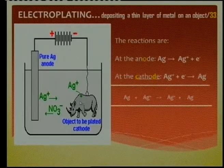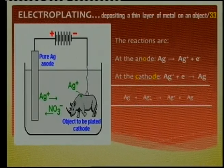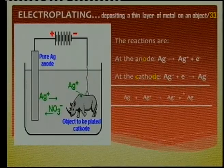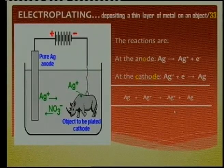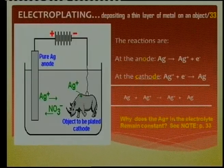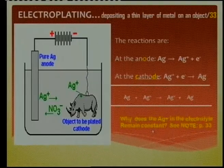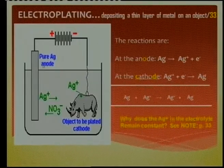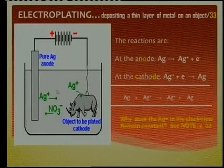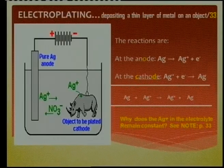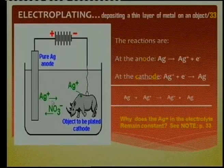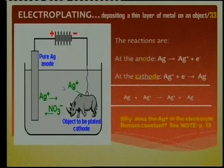Two questions: Can you write the overall reaction? And why does the silver ion concentration in the electrolyte always remain constant? Simply, as silver ions are used up at the cathode, they are replenished by the anode dissolving. You use and you produce — so the concentration stays constant.